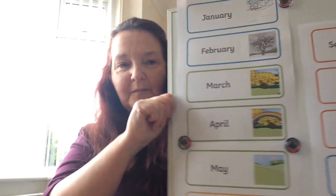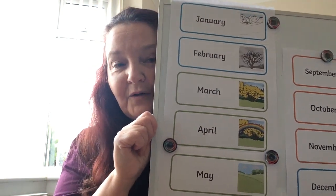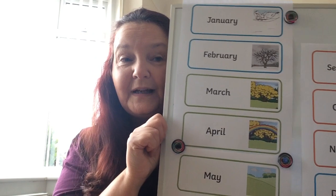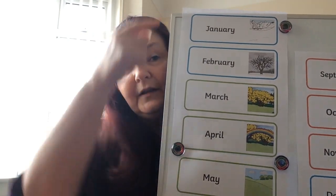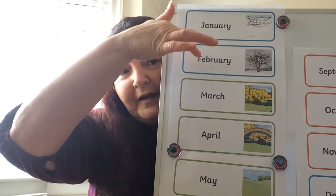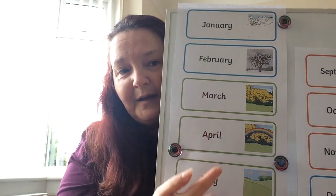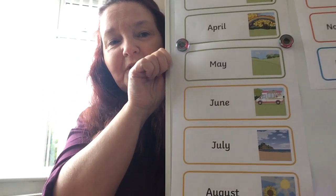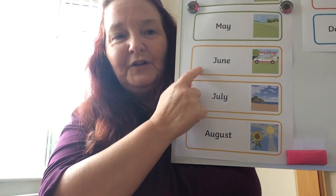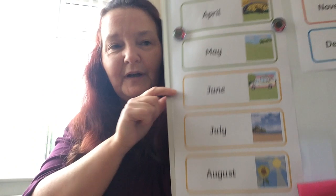I've got some months here for you to see. If you're in school your teacher might have these, or if you're at home your mum or dad can show you them on the screen. So we've got January, February, March and April, May, June, July and August.